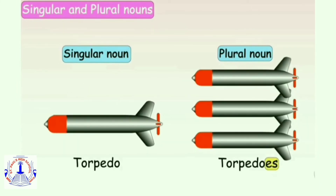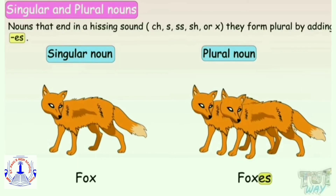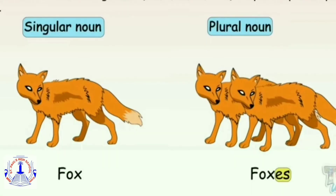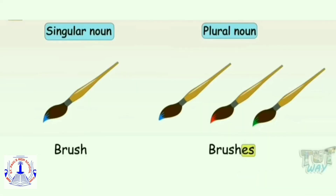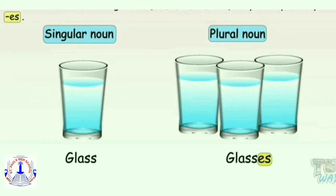As mentioned before, even if X comes at the end of a singular noun, it will take ES in its plural form. So fox becomes foxes. One fox, many foxes. One brush, many brushes. One glass, many glasses.